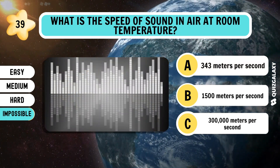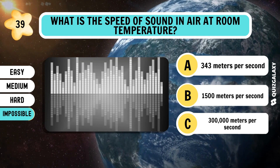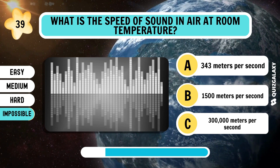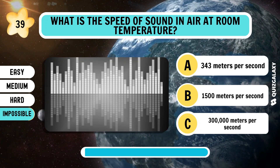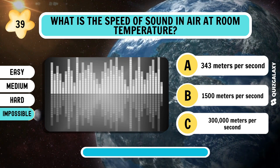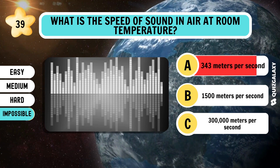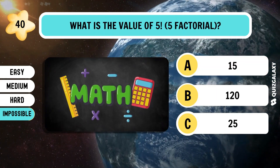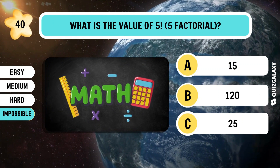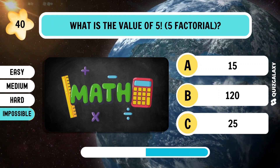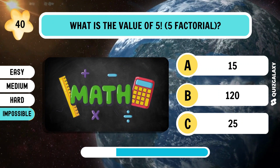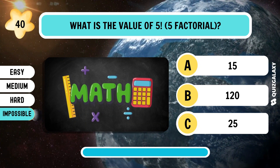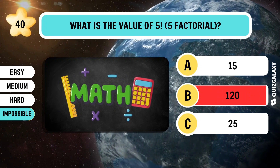What is the speed of sound in air at room temperature? 343 meters per second. What is the value of 5 factorial? 120.